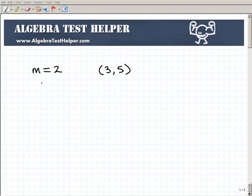So, for example, here, let's say I have a line that has a slope of 2 and also crosses to the point 3, 5. I'd like to know the equation of a line that has those characteristics.